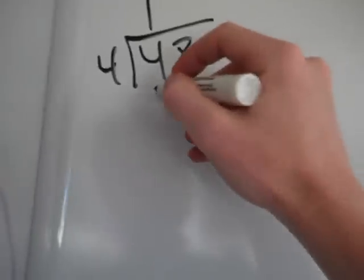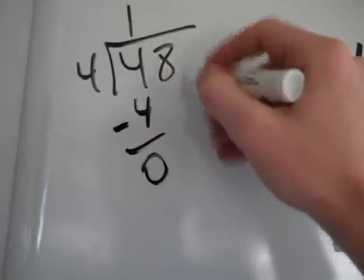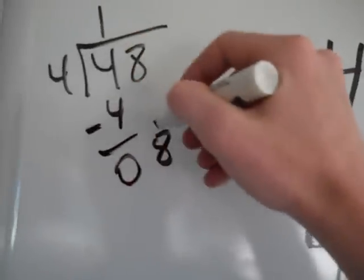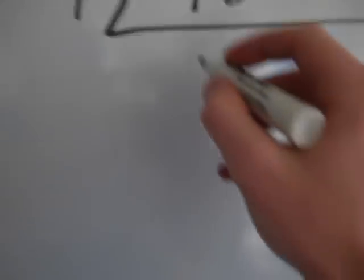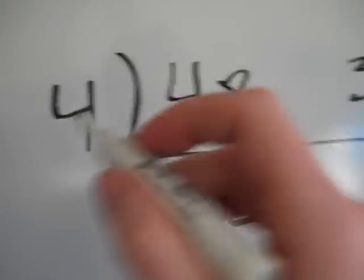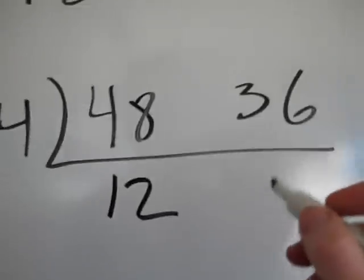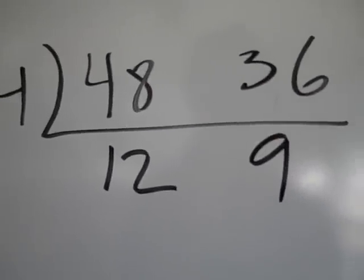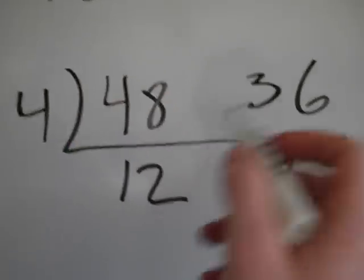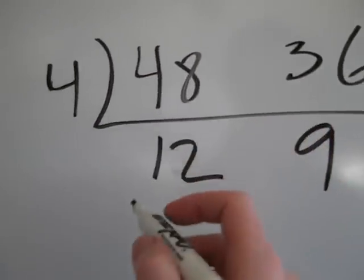Goes in once, that's 4, no remainder, and then bring down my 8. 4 goes into 8 twice, and that's going to terminate. So 12, it goes in 12 times. Now I know that 4 goes into 36 nine times, because I know that 4 times 9 is 36. So that one I just know. But you might have to divide.